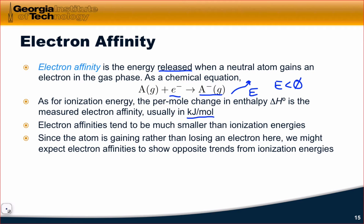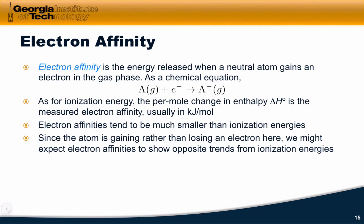In thinking about what trend to expect for electron affinity, we might imagine that since the atom is gaining rather than losing an electron in this process, we might expect that electron affinities show the opposite trends from ionization energies. Let's find out if that's the case.